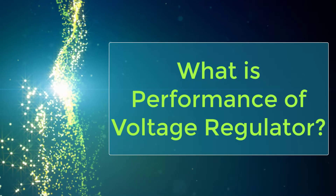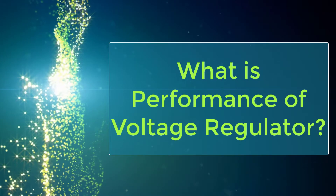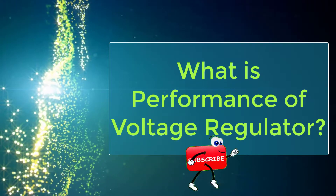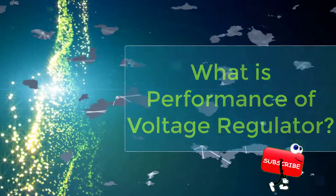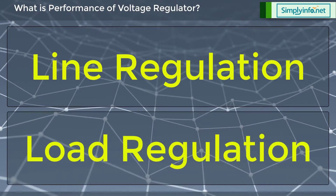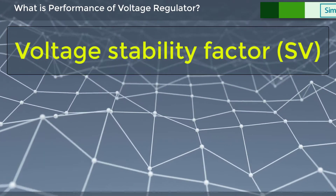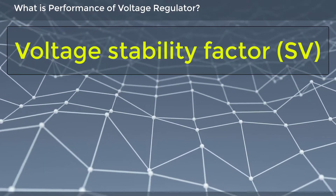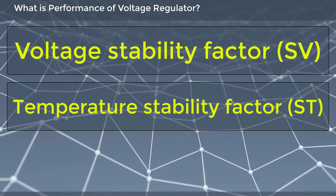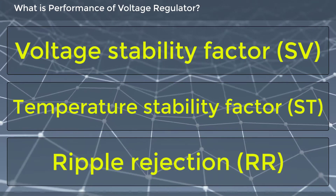What is the performance of a voltage regulator? There are six performance parameters in a voltage regulator: line regulation, load regulation, voltage stability factor (SV), temperature stability factor (ST), and ripple rejection (RR).